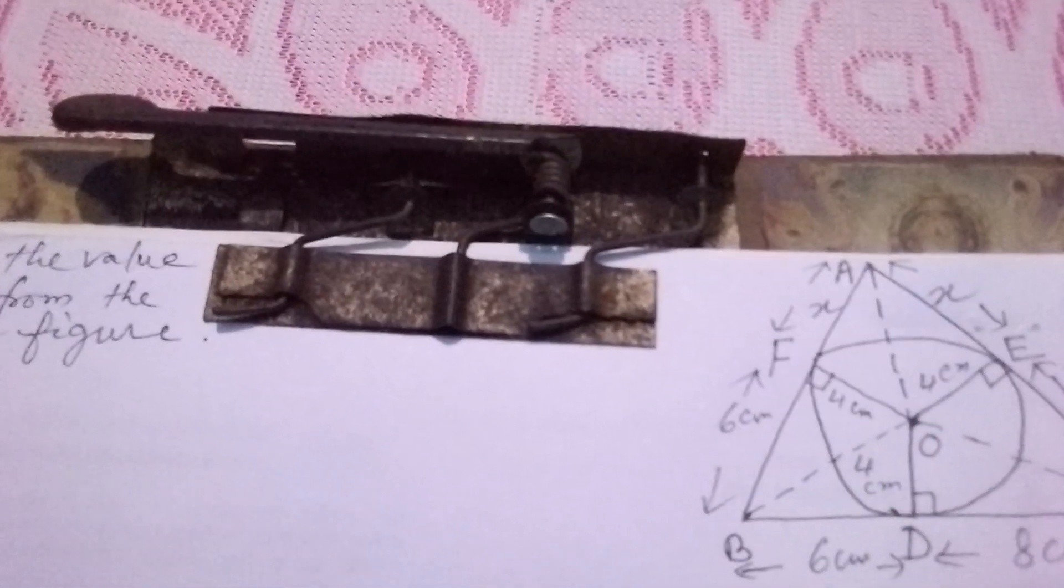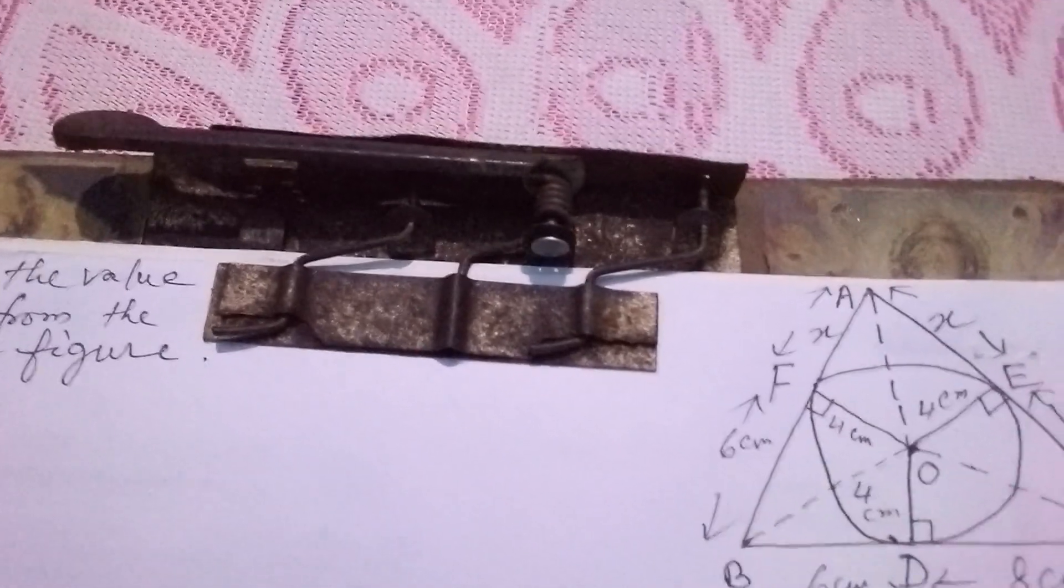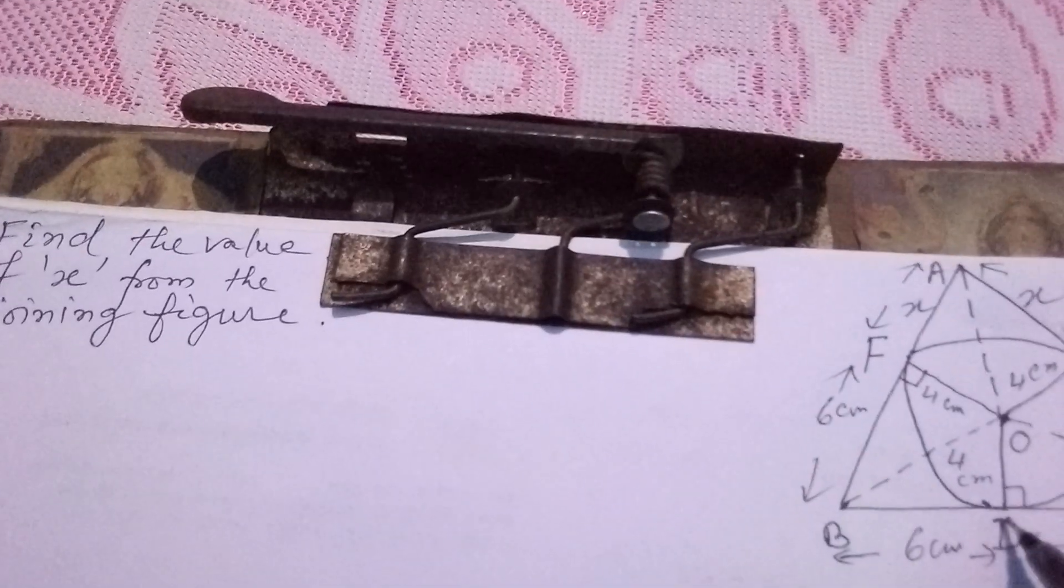Dear students, today I am going to explain a shaman circle incircle problem. Here the question is ABC is a triangle, basically it is a scalene triangle in which BD equals 6cm.